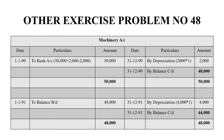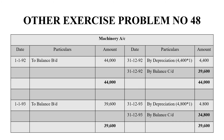The balance brought down to 1991 is Rs. 48,000. Depreciation for 1991 is 4,000 hours × Re. 1 = Rs. 4,000, giving a balancing figure of Rs. 44,000, carried down to 1992. In 1992, depreciation is 4,400 hours × Re. 1 = Rs. 4,400, and the balancing figure is Rs. 39,600.